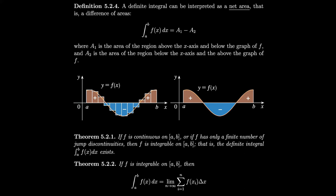If f is continuous on the interval from a to b, or if f only has a finite number of jump discontinuities, then f is integrable on this interval a, b. That is, the definite integral from a to b of f of x dx exists.